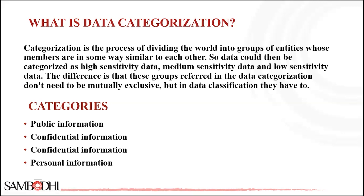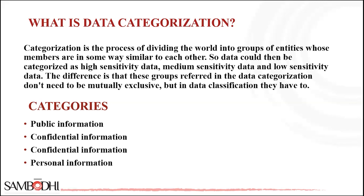Data categories are groupings of data with common characteristics or features. Data classification is the process of organizing data into categories for its most effective and efficient use. A well-planned data classification system makes essential data easy to find and retrieve. This can be of particular importance for risk management, legal discovery, and compliance.